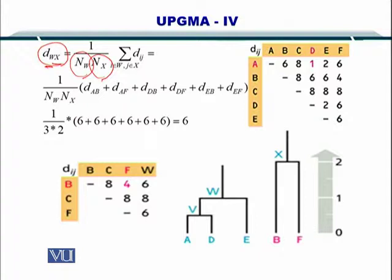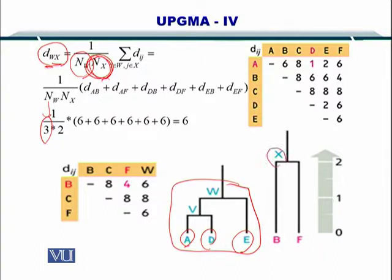So how many sequences do we have in W? This is the W cluster. We have A, D, and E. This is 3 here. What is the number of sequences in X? This is the cluster X. The number of sequences are 2. So here you go.